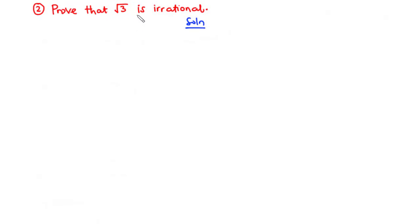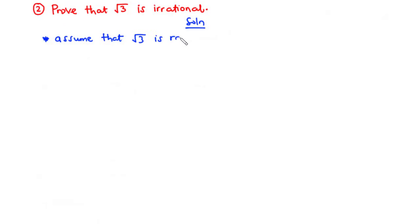To prove that the square root of 3 is irrational, first of all, we are going to assume that the square root of 3 is rational. If the square root of 3 is assumed to be rational, then it follows that it can be expressed as a fraction in the form a over b, where b is not equal to 0, and a and b are integers.